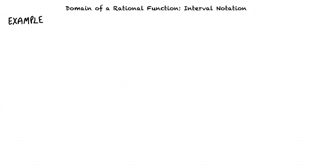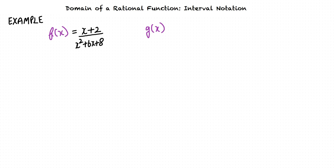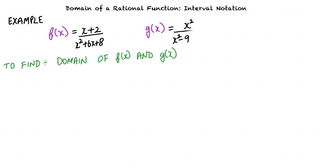Let us consider an example. Let us say we have two functions f and g such that f equals (x + 2) over (x² + 6x + 8), and g equals x² over (x² - 9), and we are required to find the domain of these functions. By definition, domain is the set of all inputs for which a function exists. Thus, the points where the function will not exist will not be included in the domain.